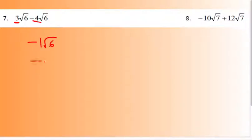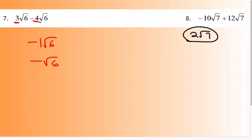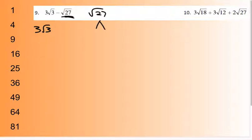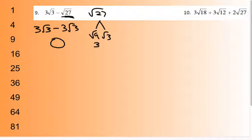Now for adding and subtracting radicals. Number seven: 3√6 minus 4√6 — they are both square root of 6, so this is like 3 minus 4, giving you negative square root of 6. Number eight: 10√7 plus 12√7 is 22√7 — I treat the square root of 7 like a variable. For number nine, square root of 27 simplifies: break it into 9 and 3, so √27 = 3√3. Then 3√3 minus 3√3 equals zero.